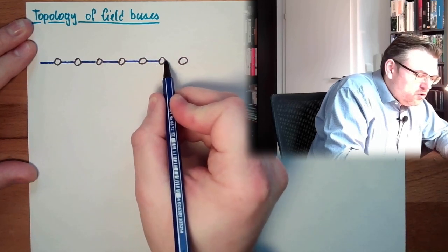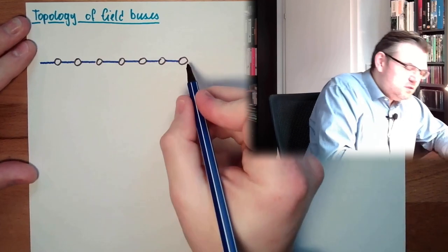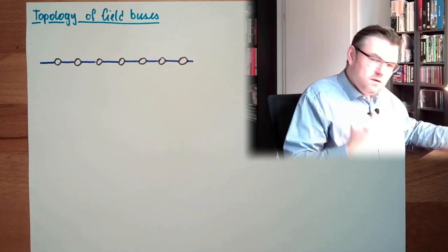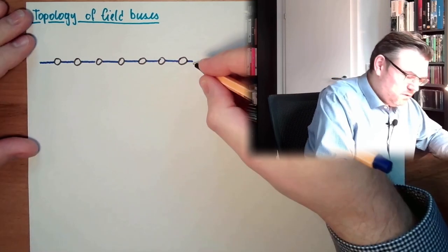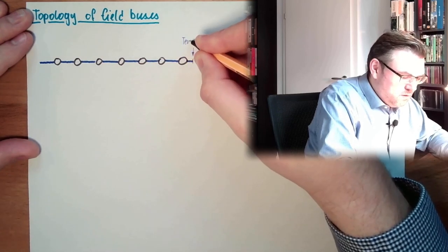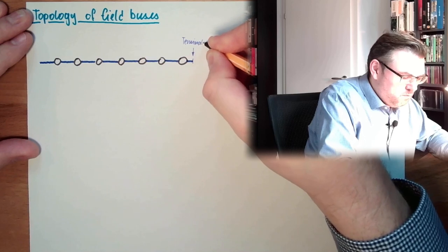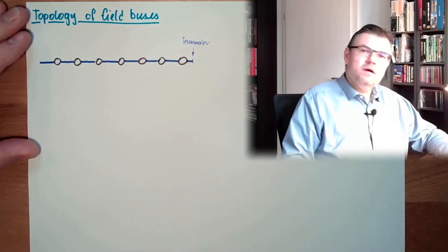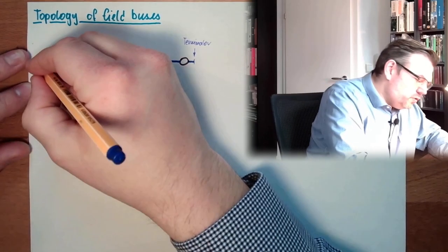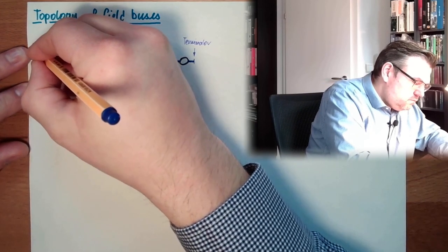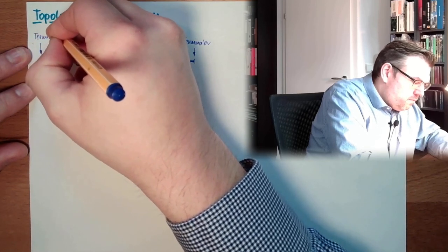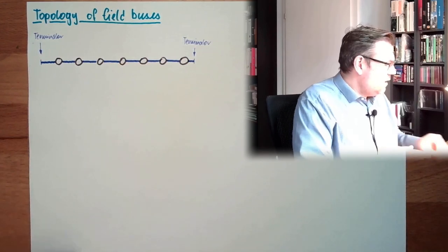This is a shared communication media everybody has access to. Usually, here at the end, we need a terminator. This is not Arnold. There's a terminator. This terminator is terminating the line. This is usually some kind of resistor or something like this. And also here we have a terminator. This thing here is called line.